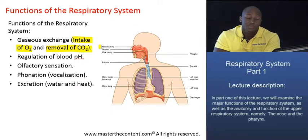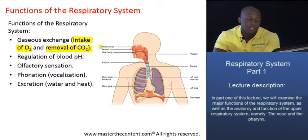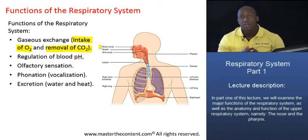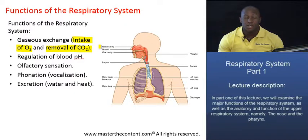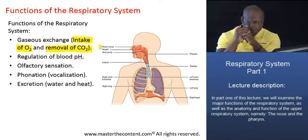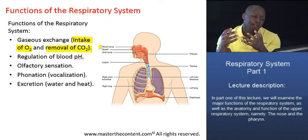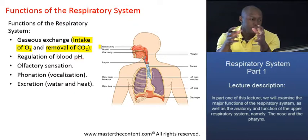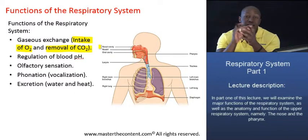The respiratory system also plays a role in regulating the pH of your blood. As you know, your body maintains a relatively stable pH of your blood and body fluids in general. When this acid-base balance or pH is disturbed, your body can do things to restore it — to restore that homeostatic level that it needs to function properly.